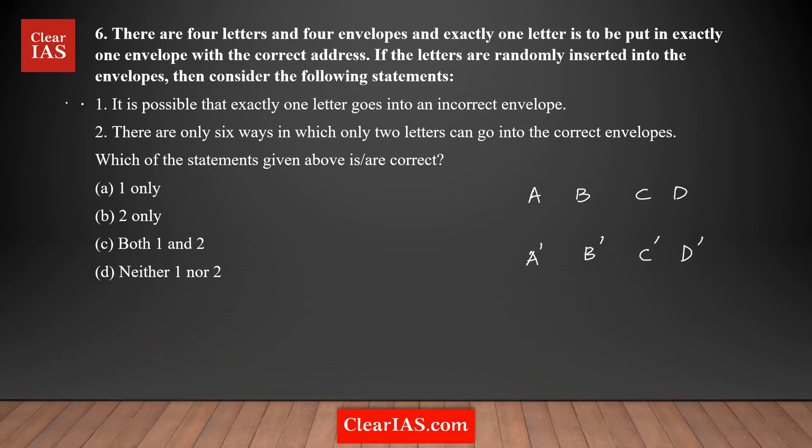Now let's take statement one. Statement one is saying that it is possible that exactly one letter goes into an incorrect envelope. That means they're saying statement one is saying that only one letter can go into an incorrect envelope. Let's take an example here. Let's say letter A is going to an incorrect envelope, let's say it's going to B dash. It is actually supposed to go to A dash, right?